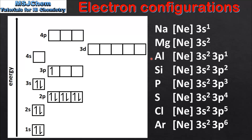Moving on to aluminium which has the electron configuration Ne3s2 3p1, and we put one electron in the 3p sub level. Next is silicon which is Ne3s2 3p2 — once again we have degenerate orbitals so the second electron goes in the next available empty orbital. Moving on to phosphorus which is Ne3s2 3p3, and the third electron occupies the next available empty orbital. Moving on to sulfur which is Ne3s2 3p4, and as you can see we now start to pair up the single electrons.